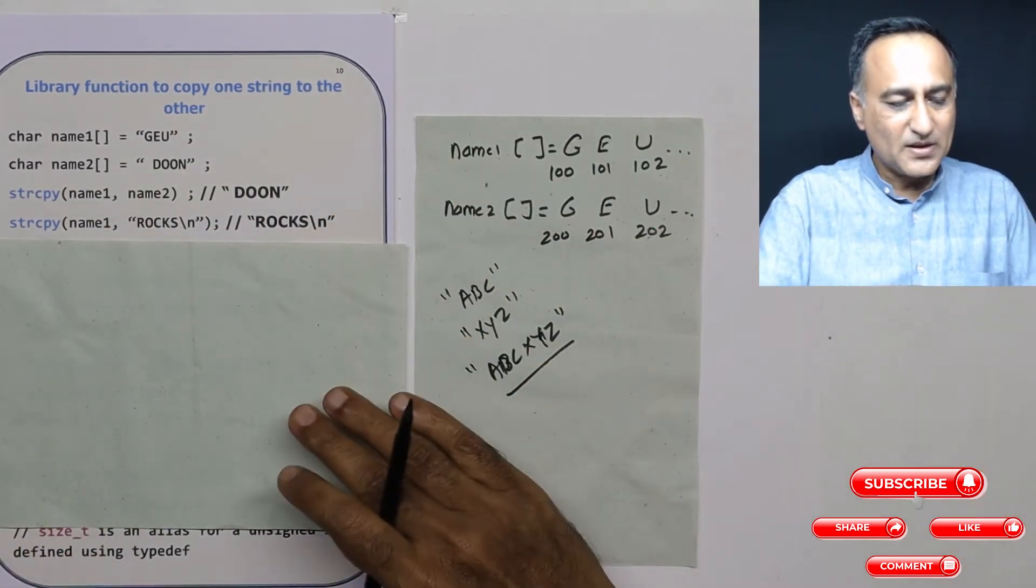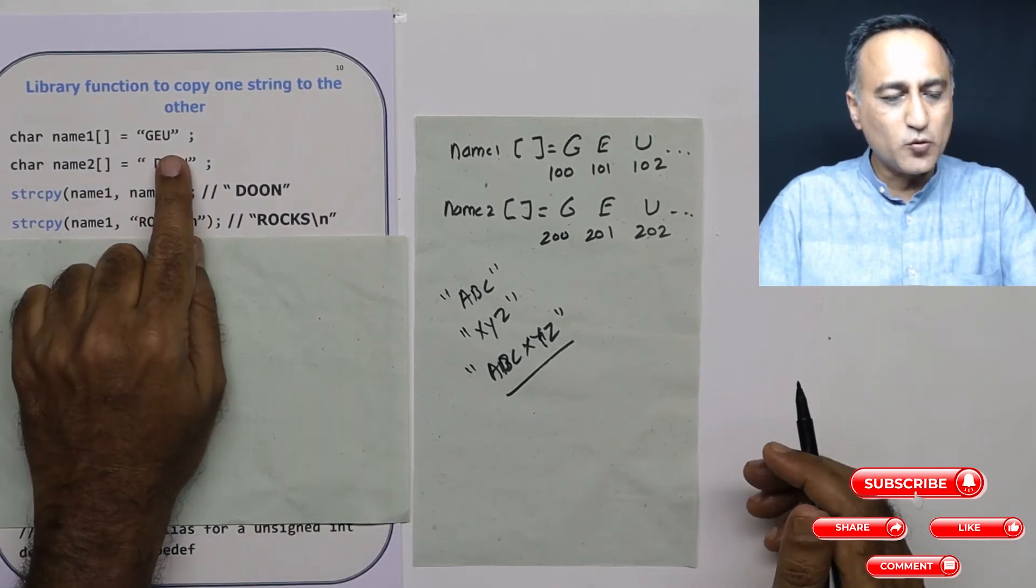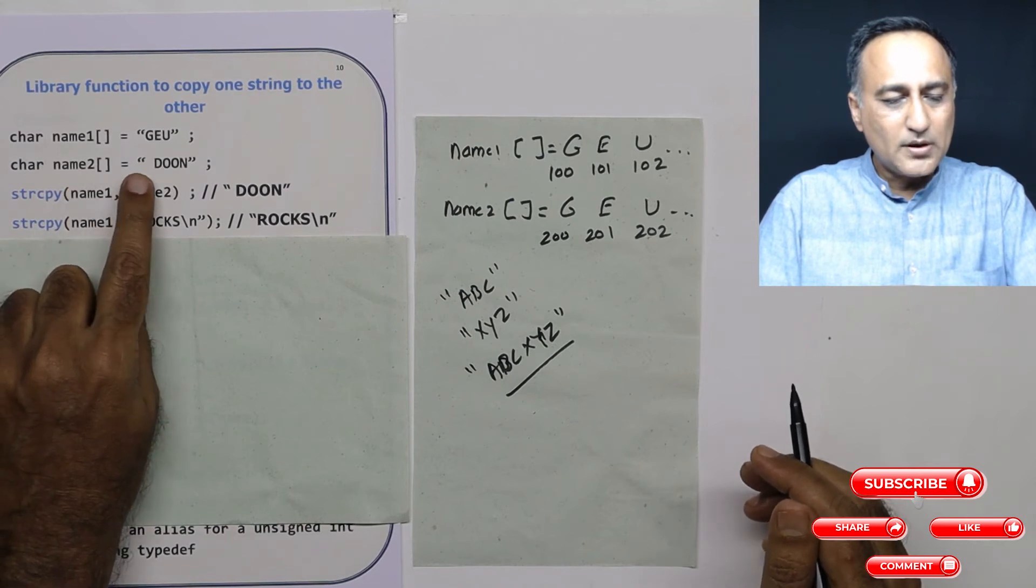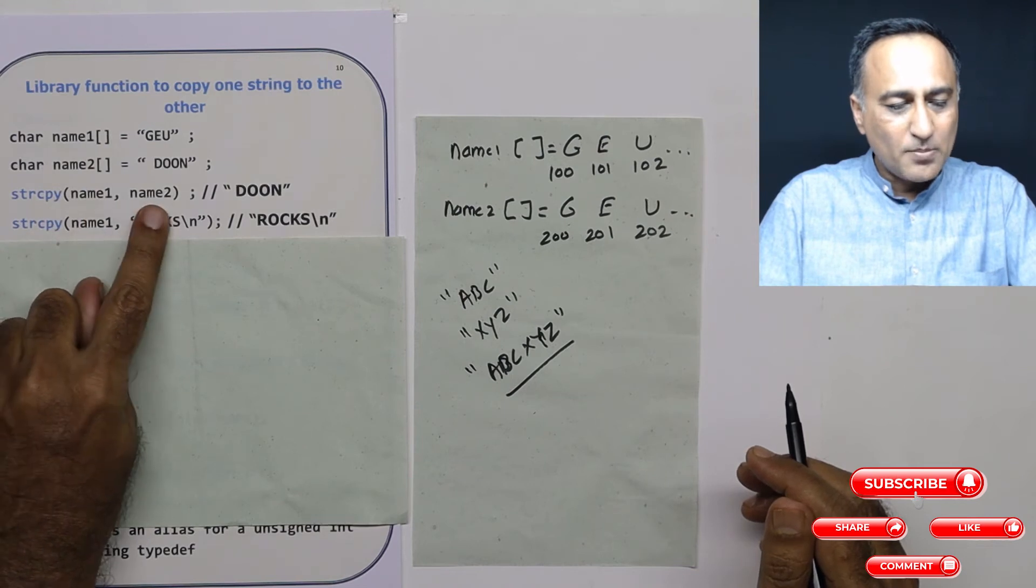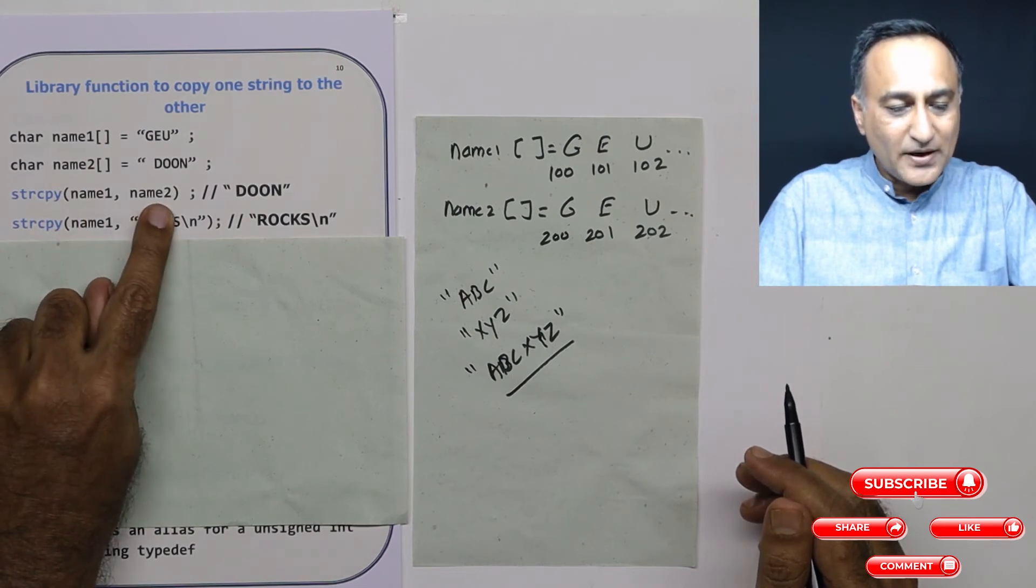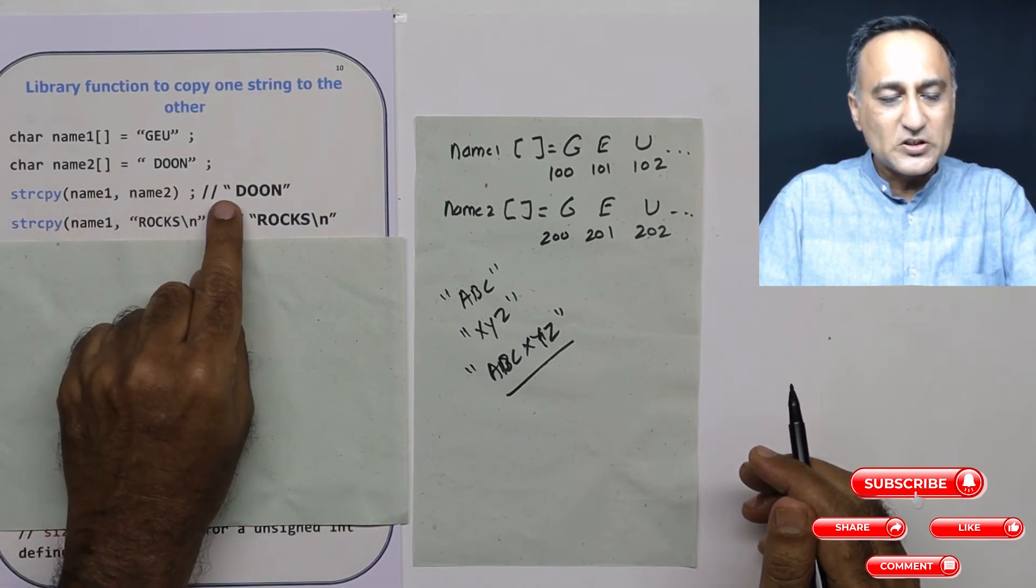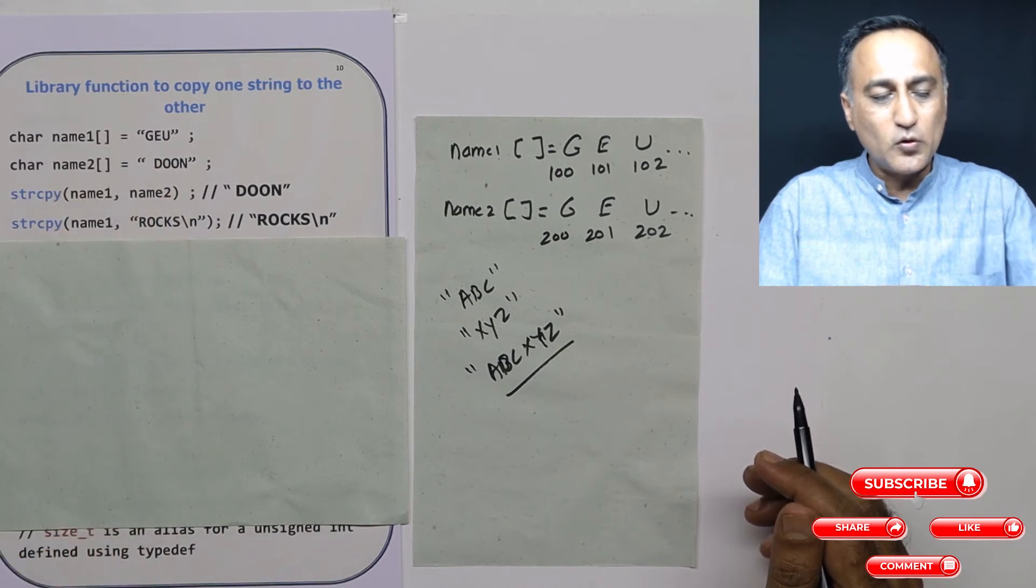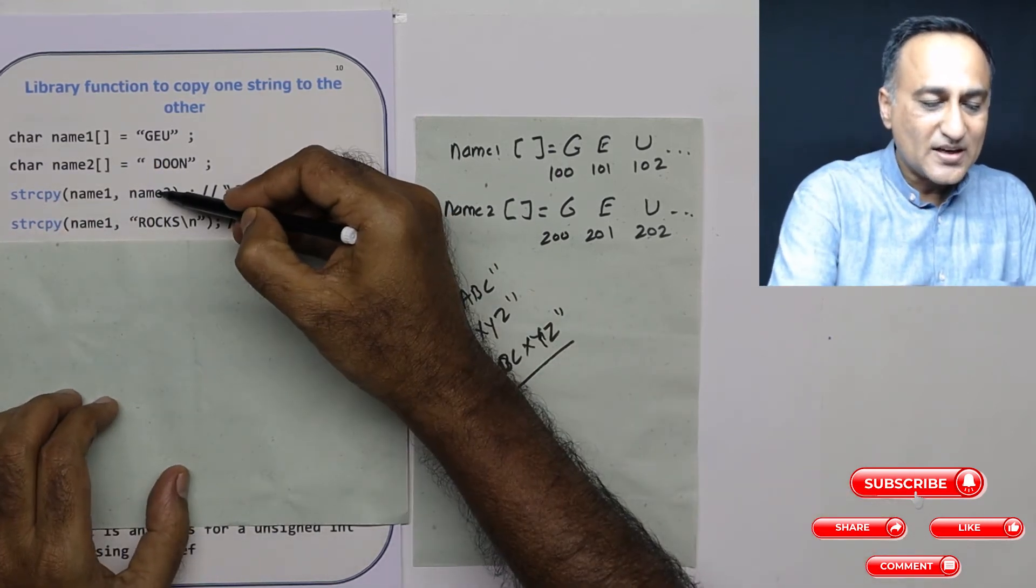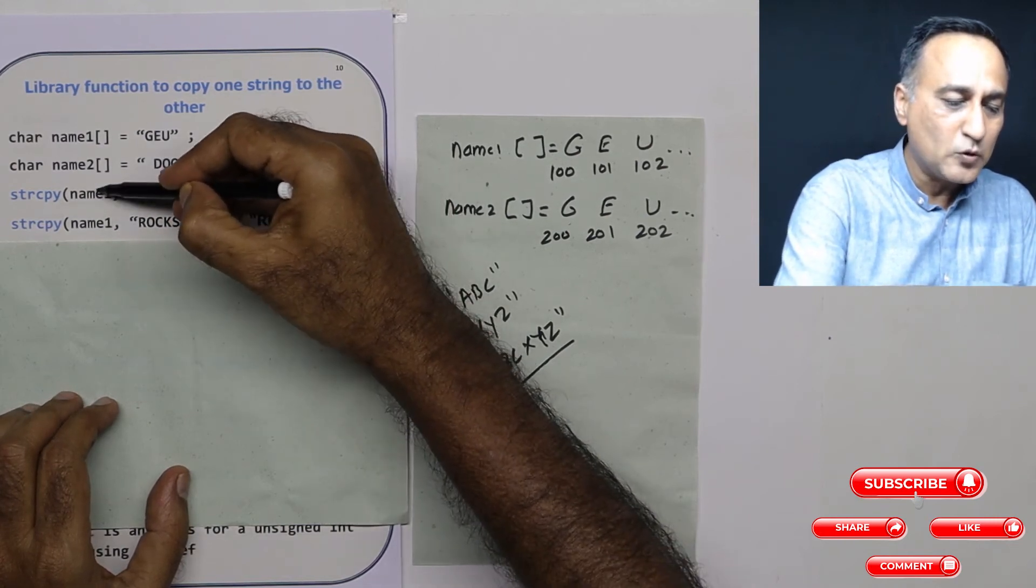Let us say in my first array, I got name1 as geu. Second array, I've got name2 as dune. So if I do string copy name1 comma name2, the contents of name2 are going to be copied into name1. So name1 is going to become dune. The geu is lost and dune gets overwritten into name1. So this you can consider as the source, this as the destination or target. The copy happens from name2 to name1.